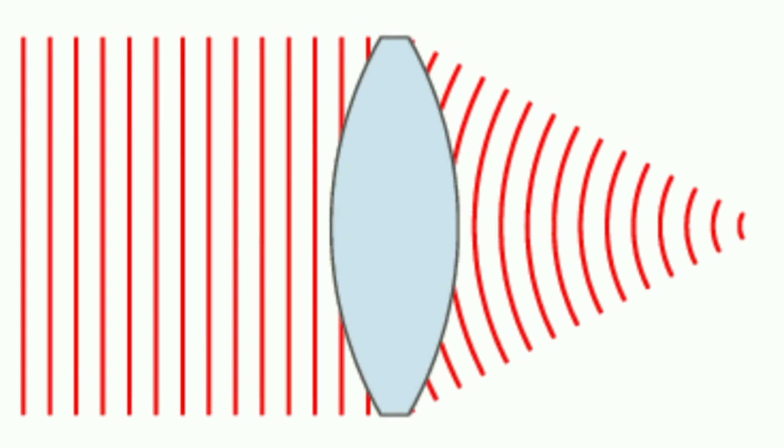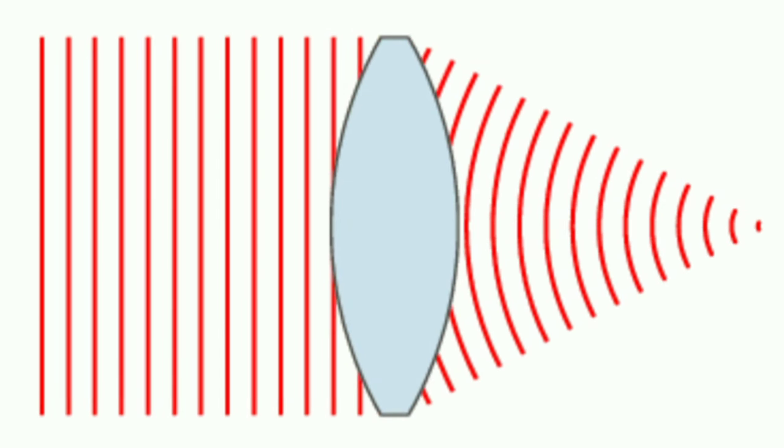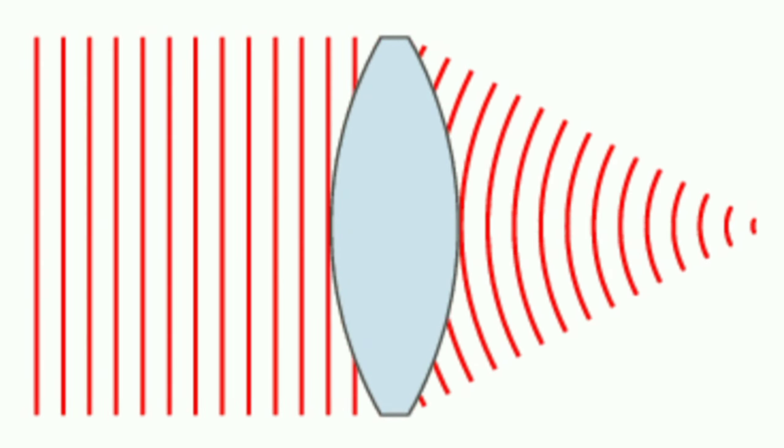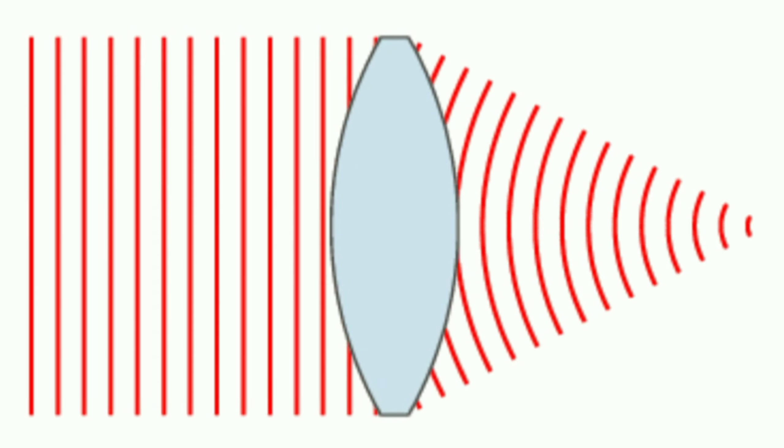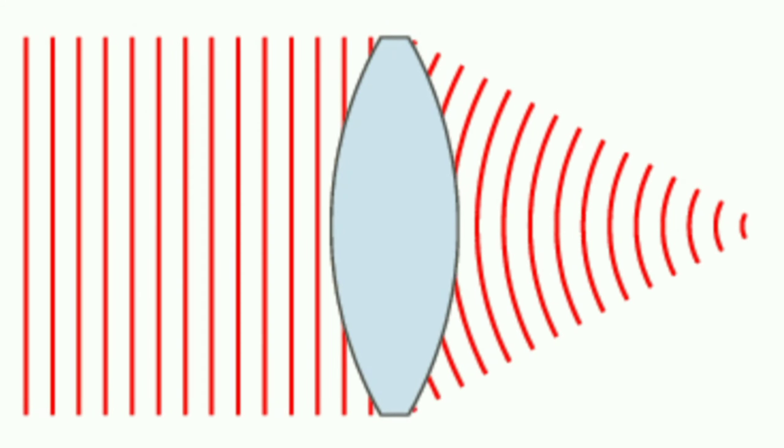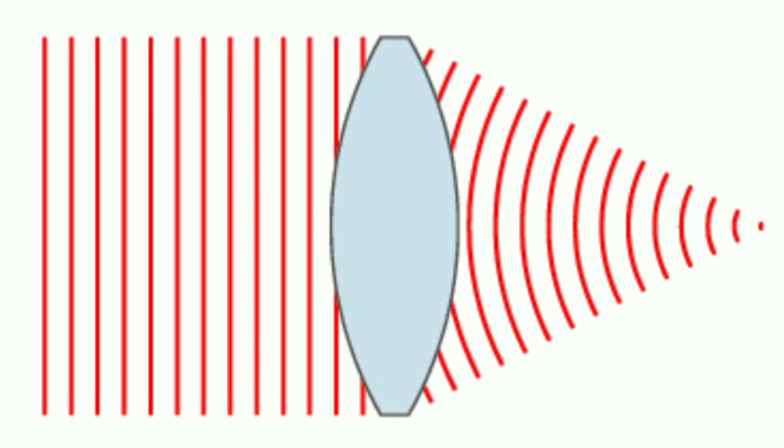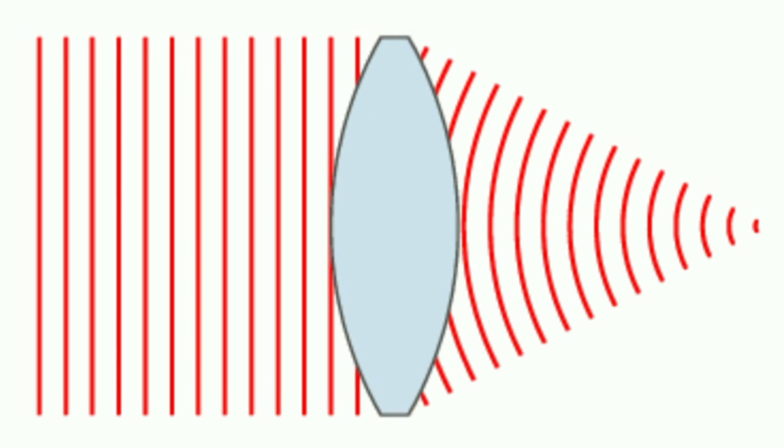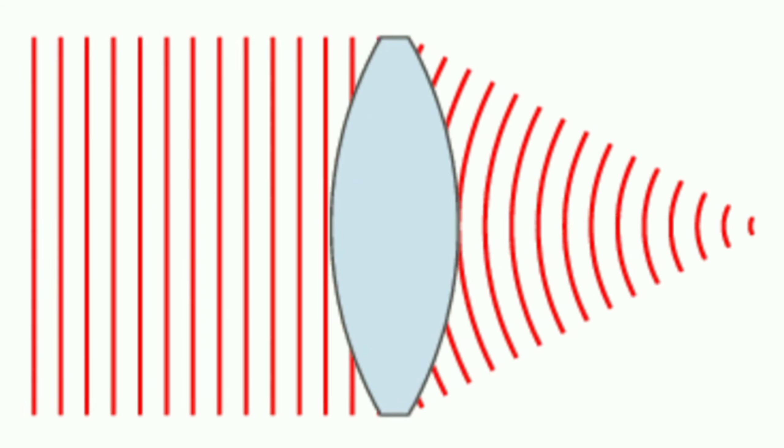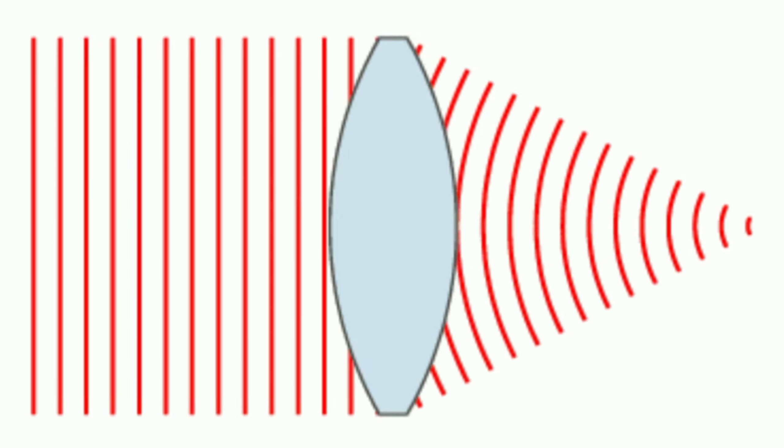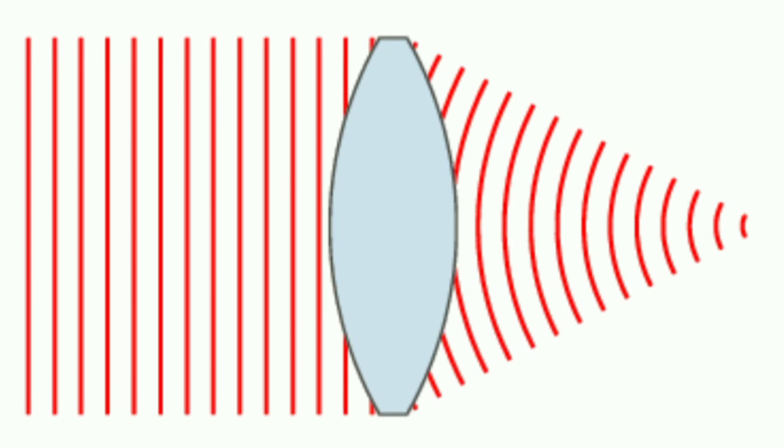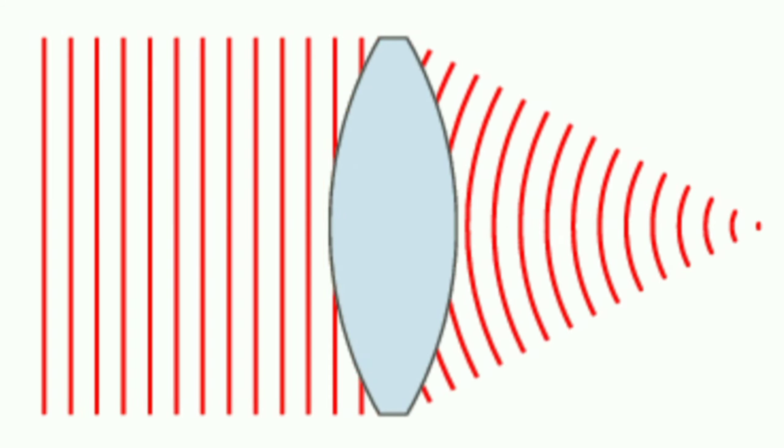If the speed of propagation is different at different points of a wavefront, the shape or orientation of the wavefronts may change. For example, a lens can change the shape of optical wavefronts from planar to spherical, as you see from this figure.